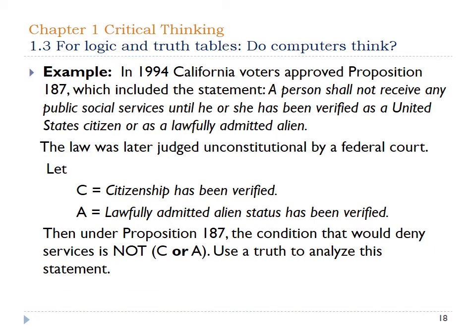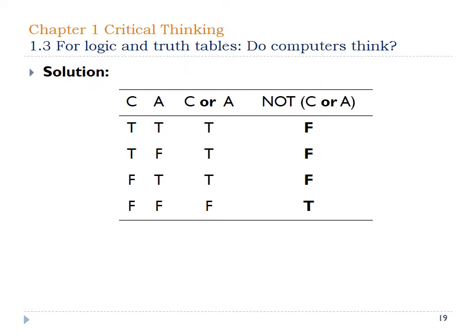In 1994, California voters approved Proposition 187, which states a person shall not receive any public social services until they have been verified as a United States citizen or as a lawfully admitted alien. A lawmaker was later judged it unconstitutional. Looking at the truth table: citizenship verified (C) and lawfully admitted alien status verified (A) are the two pieces. Under Proposition 187, the condition that would deny services is not C or A. The only time someone would not receive services is if they were neither a citizen nor a lawful alien — meaning both C and A are false.